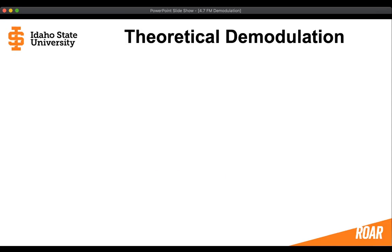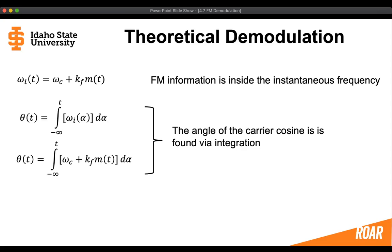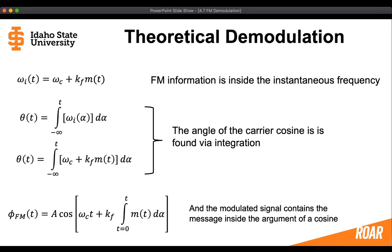Let's first consider the theoretical way to demodulate an FM signal. The FM information is contained inside the instantaneous frequency, since frequency modulation directly modulates the instantaneous frequency. That gives us some angle that contains an integral of the message. When we write the FM signal, we have a constant amplitude multiplied by a cosine that contains a carrier frequency multiplied by time, plus some constant multiplied by an integral of the message.